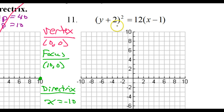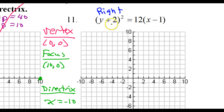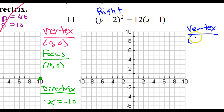Finally, we have one where the vertex is not 0 comma 0. Notice how the y is squared — that tells me it's a sideways graph. Because the 12 is positive, I know it's going to be facing to the right. The vertex is the opposite of both of these values, but be careful: the x value of the vertex comes from the x part of the equation. So that negative 1 becomes positive 1, and this positive 2 becomes negative 2.